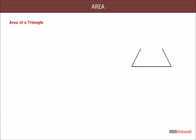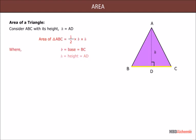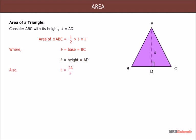Area of a Triangle: Consider triangle ABC with height H equal to AD. Area of triangle ABC equals half of B times H, where B is the base BC and H is the height AD. Also, base B equals twice the area divided by height H, and height H equals twice the area divided by base B.